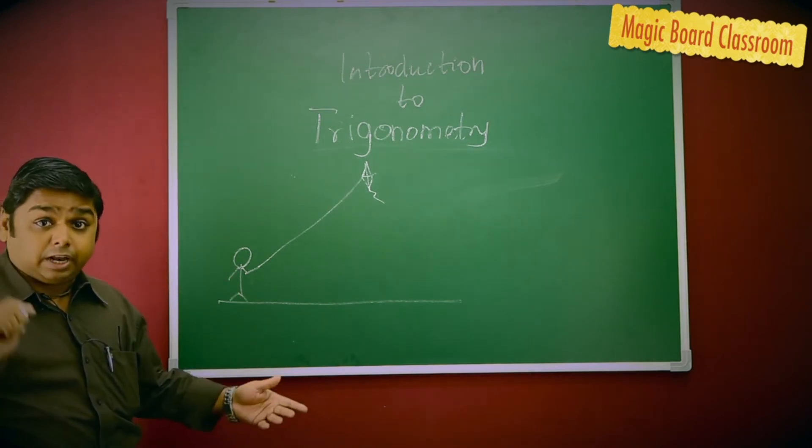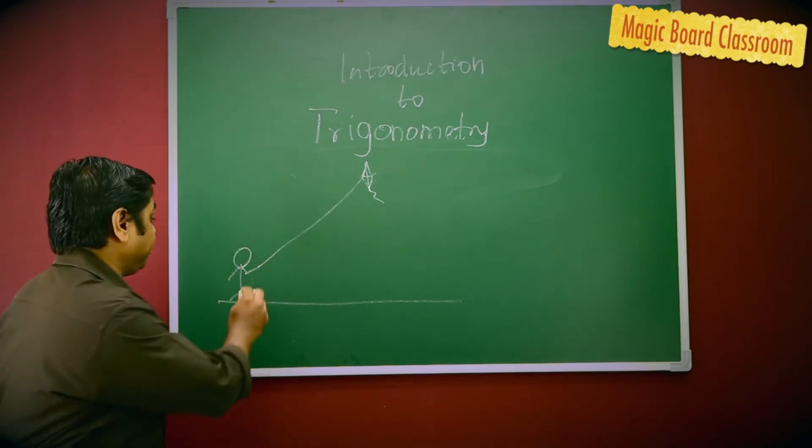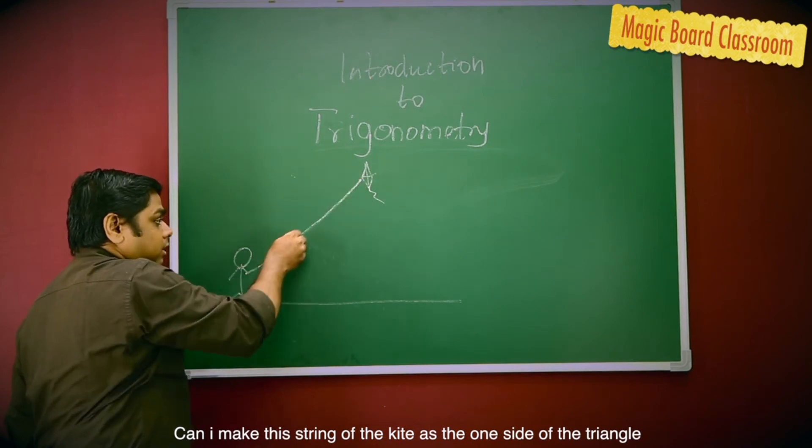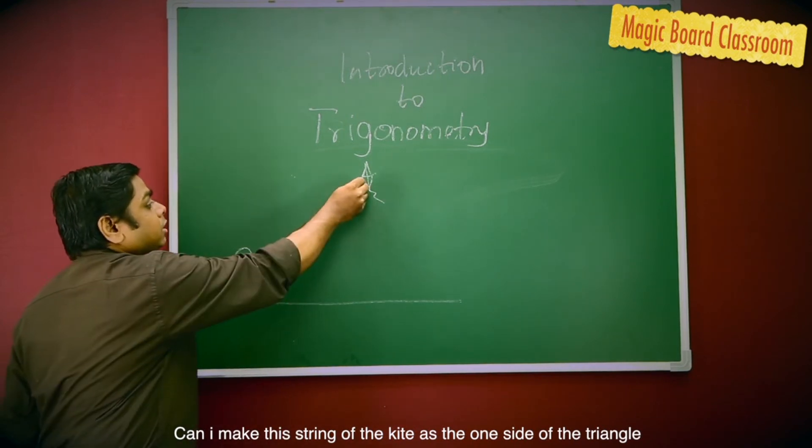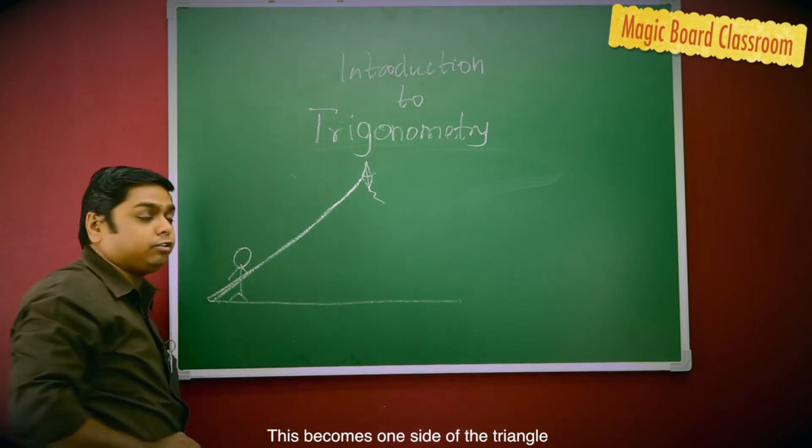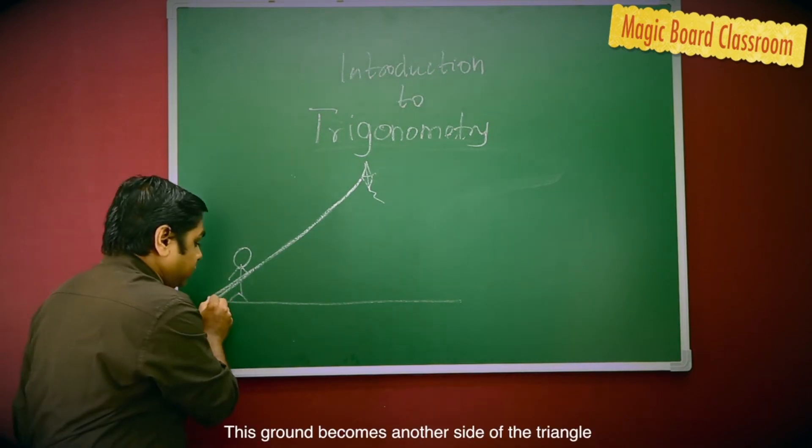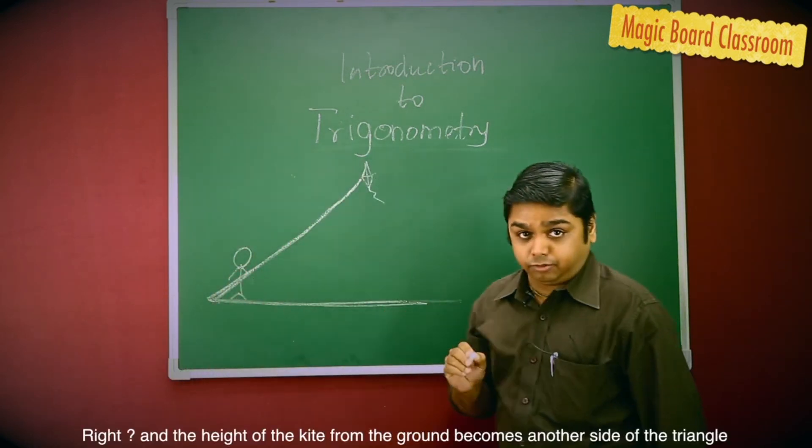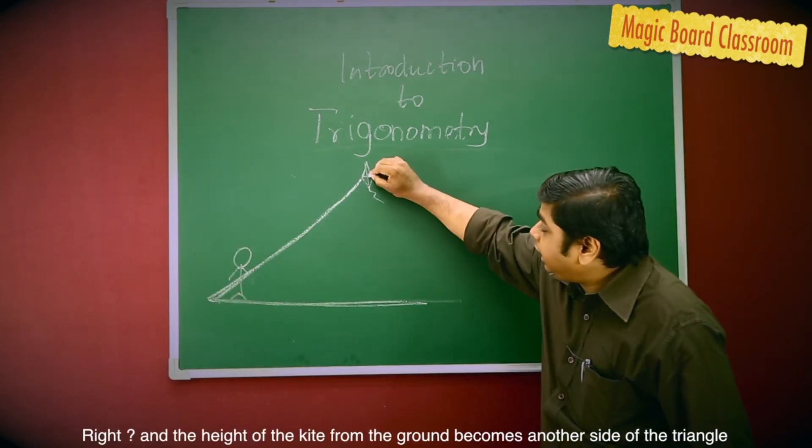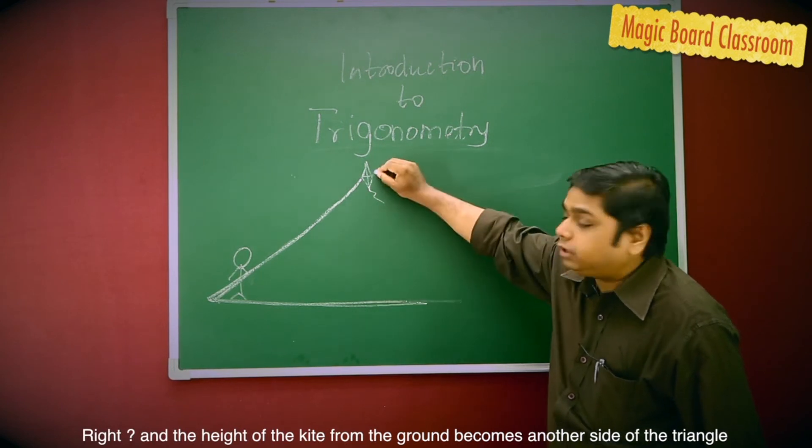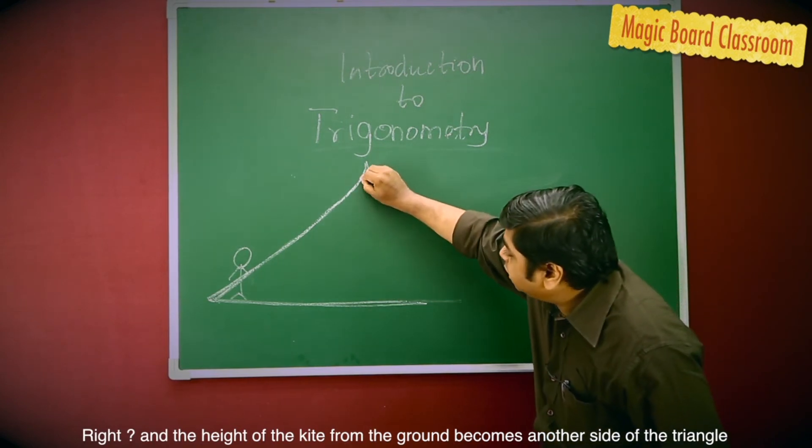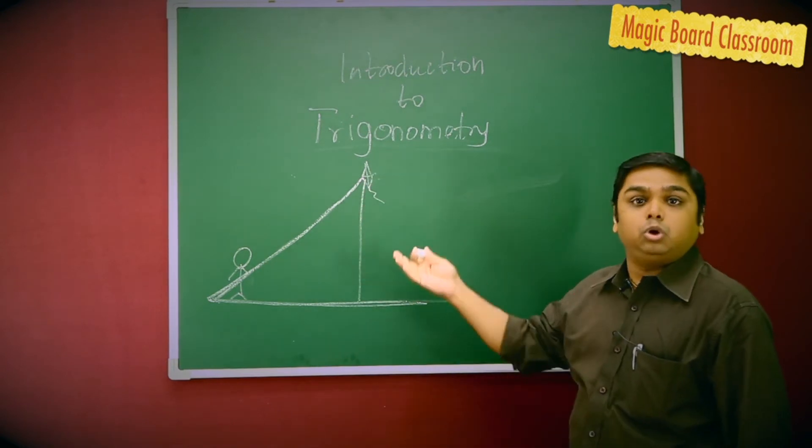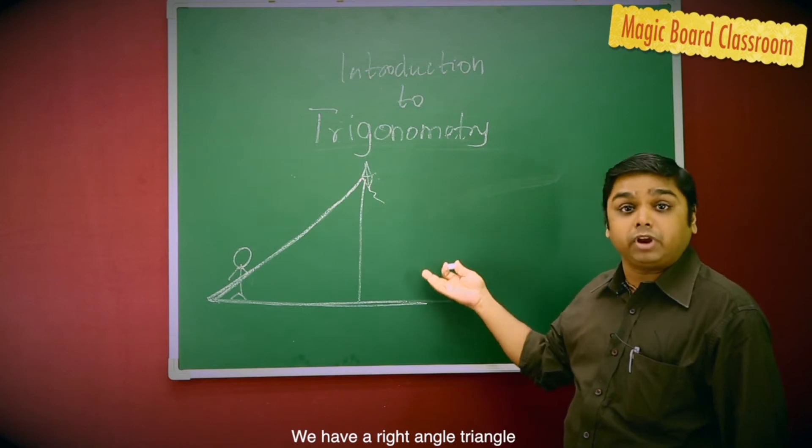Let me tell you. Can I make this string of the kite as one side of the triangle? This becomes one side of the triangle. This ground becomes another side of the triangle. And the height of the kite from the ground becomes another side of the triangle. What do we have over here? We have a right-angled triangle.